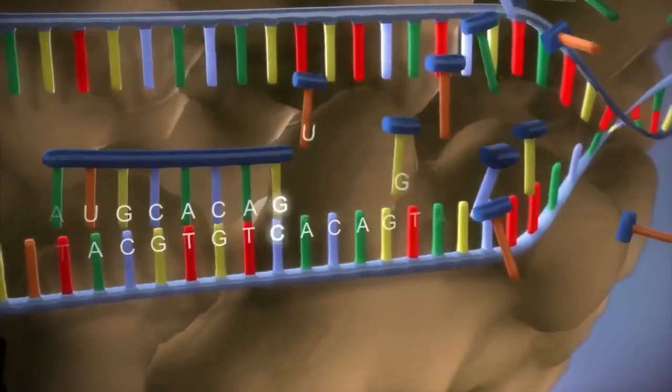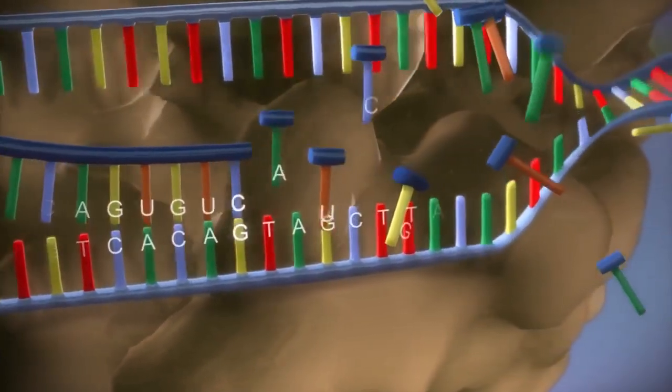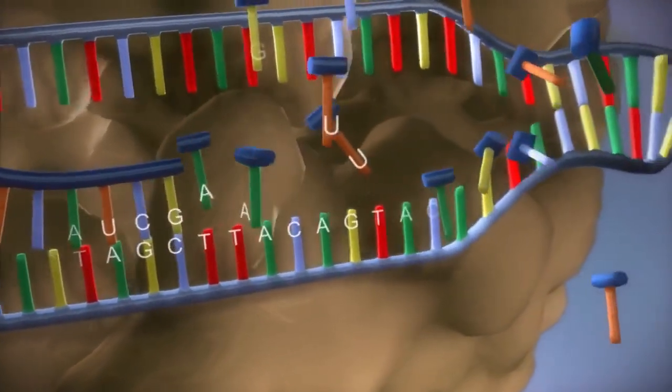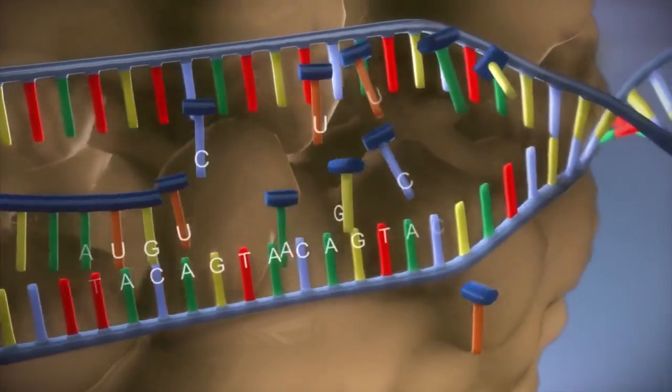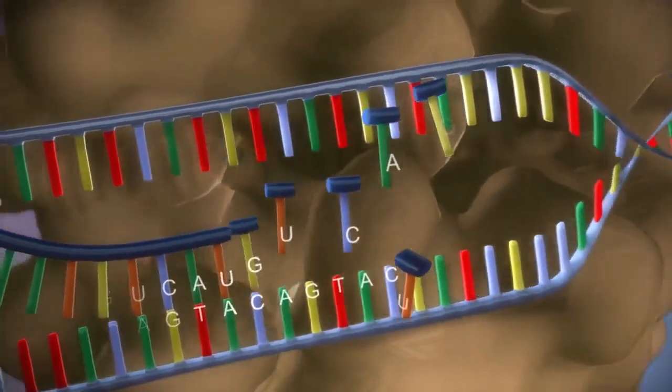The DNA code determines the order in which the free bases are added to the messenger RNA. This process is called transcription.